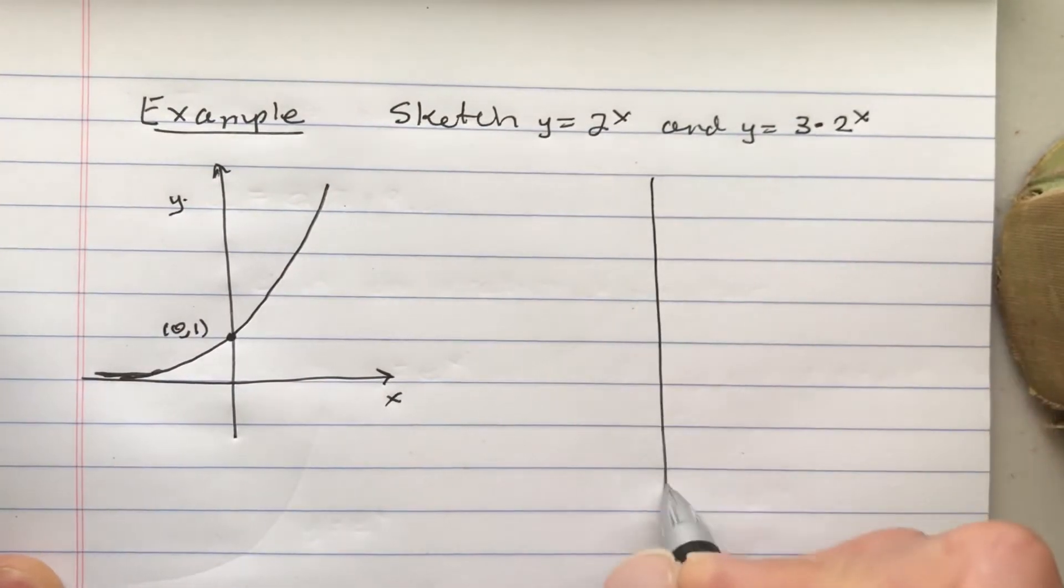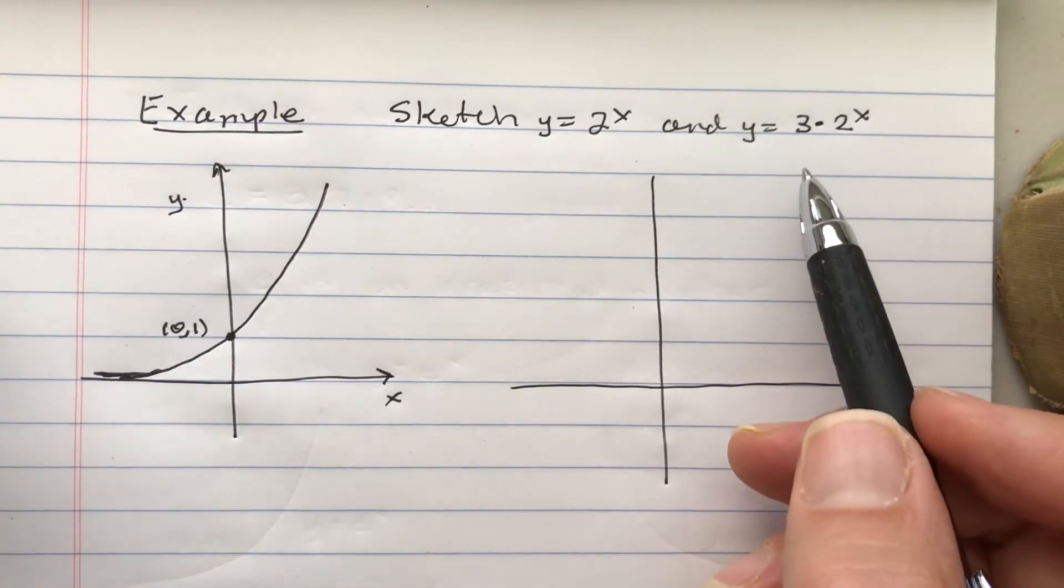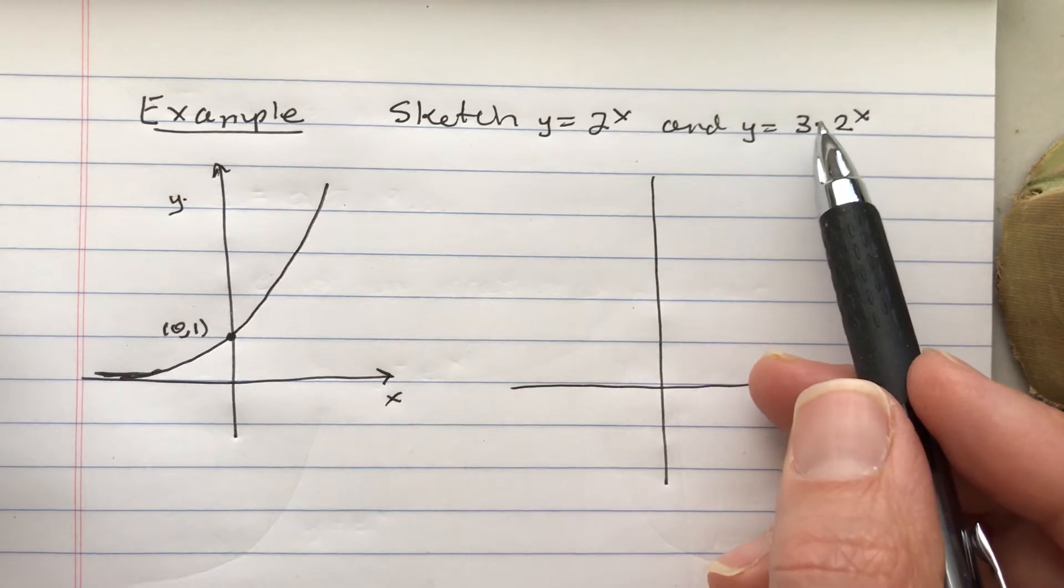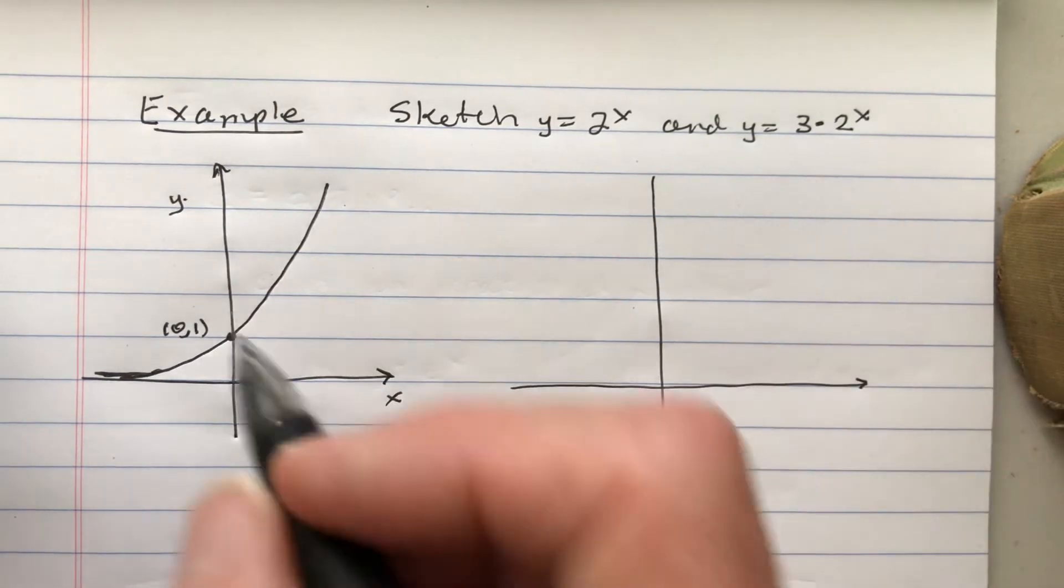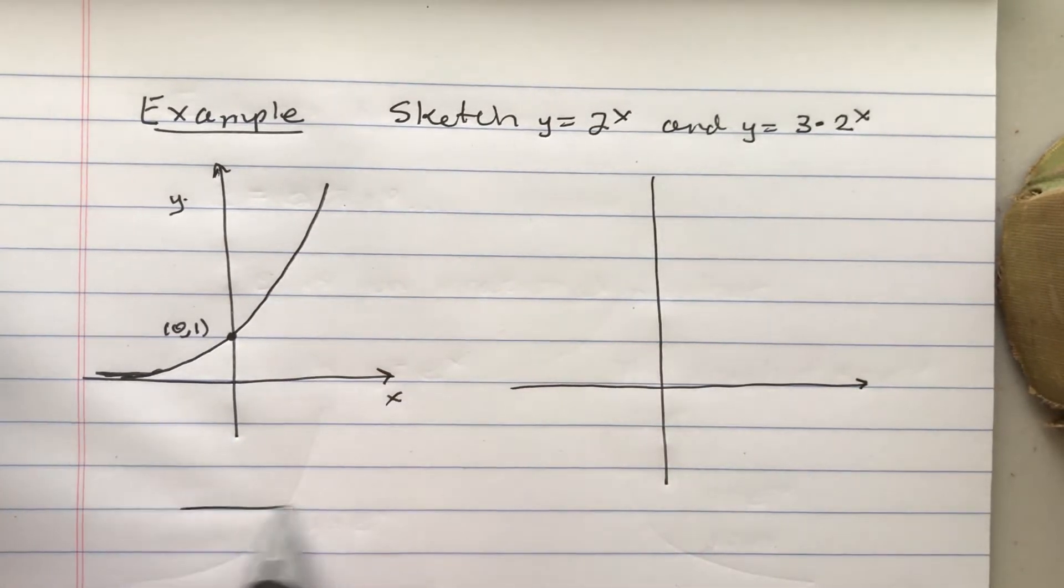So what happens when you multiply a function by a positive number? If that number is greater than 1, what happens is it stretches the function out. But I think a really good way to look at this is just simply by plotting some points.